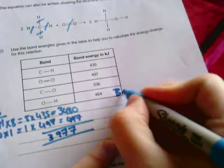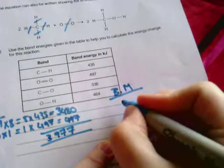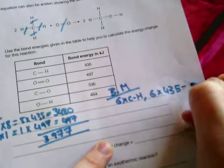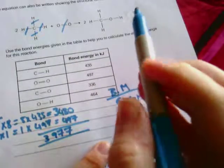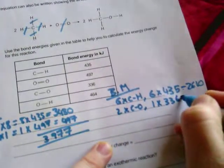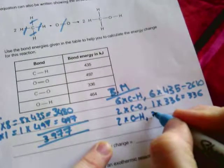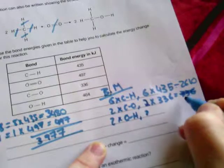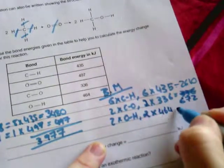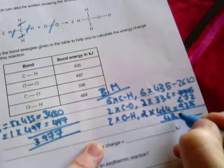Now, if I do bonds made over here, we've got one, two, three times two. So we've got six times the carbon-hydrogen bond. So 2610. We've got one times two, so two times the carbon-oxygen bond. And then we've got two, because there's two of those, two times the oxygen-hydrogen bond, 672. Two times 464, which equals 928. If I add these all up together, I should get 4210 kilojoules per bond.